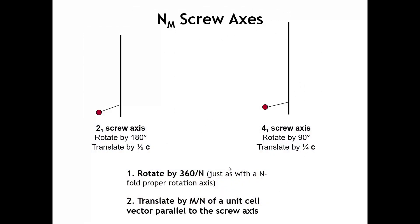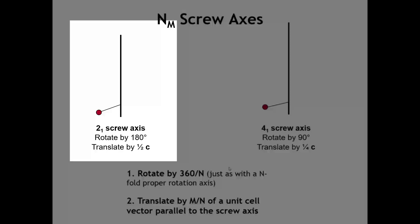Now let's take a look at screw axes. The idea of a screw axis is that we rotate by 360 divided by N — a proper rotation — and then follow that by a translation parallel to the axis. The magnitude of that translation is M divided by N of the lattice vector in that direction. For example, with the 2 sub 1 screw axis, because it's a 2 we rotate by 180 degrees, and then translate by one half of the C lattice vector. After two applications, we're back to the same orientation but translated by an entire lattice vector upward.